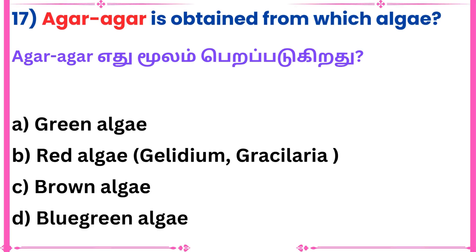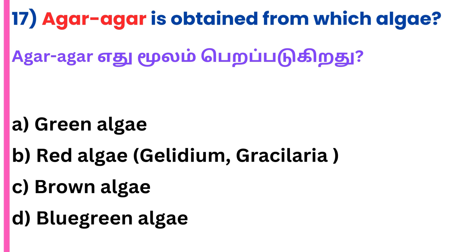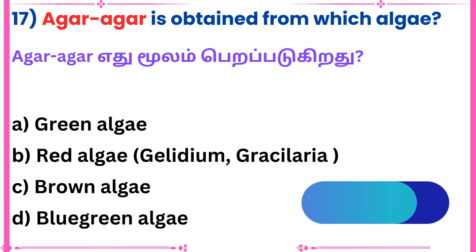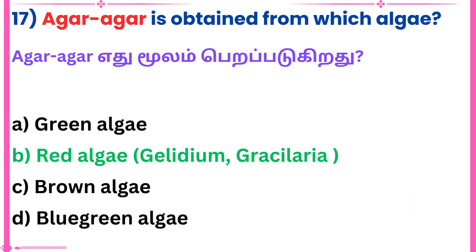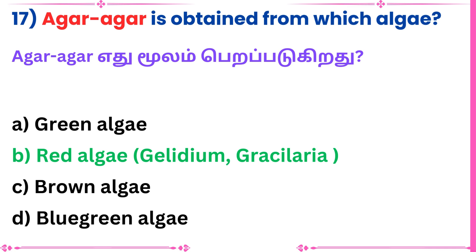17th question: Agar agar is obtained from which algae? Answer: Red algae.